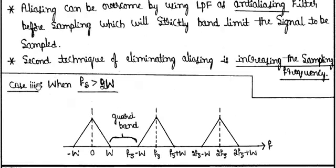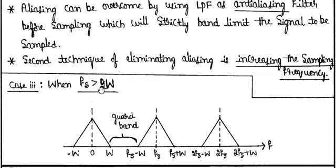The third criteria is when the sampling frequency is set greater than two times the highest message signal frequency. Under this condition, there is an unutilized frequency range between the two spectra, which is called the guard band. This is the most preferred condition for sampling and is referred to as the practical case of sampling.